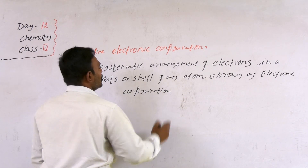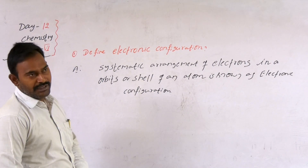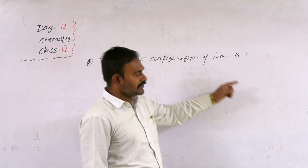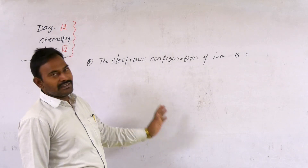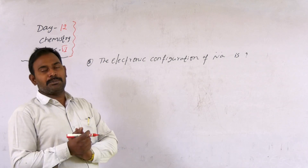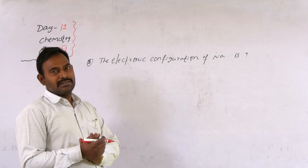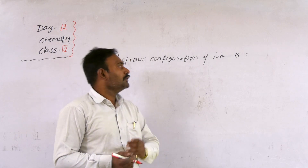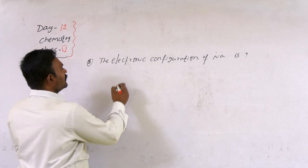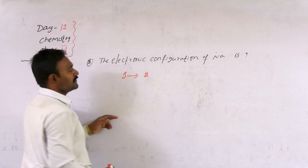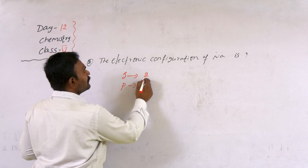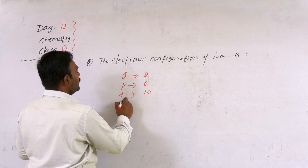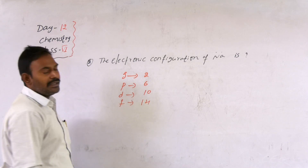Within the shells, sub-shells and orbitals are present. The electrons revolve in circular paths called orbits, shells, or energy levels, which are made up of sub-shells and orbitals: s, p, d, and f. In the s orbital, the maximum number of electrons is 2. In the p orbital, it is 6. In the d orbital, it is 10. In the f orbital, it is 14.